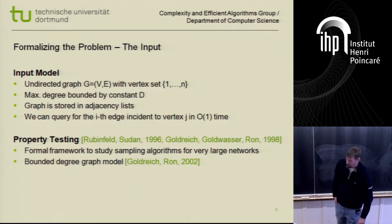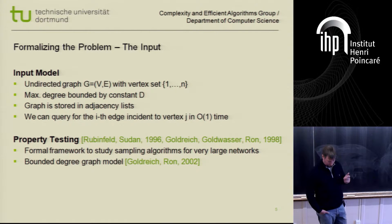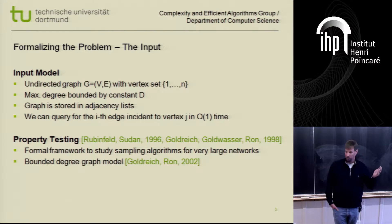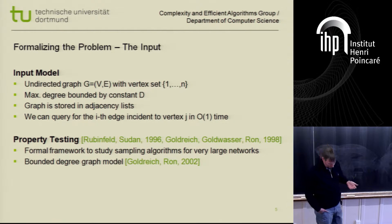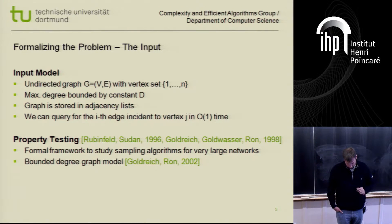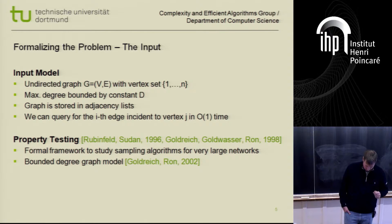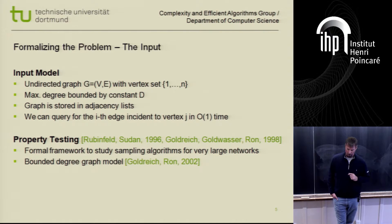I want to do this using random sampling in time sublinear in the input size. Since I want to talk about sampling processes, I need to define how I access the input graph. I'll assume my graph is given as adjacency lists: an array of vertices numbered 1 to n, and for each vertex a list of its neighbors. I also assume the graph has bounded maximum degree, using an oracle which I can query for the i-th edge incident to vertex j in constant time.